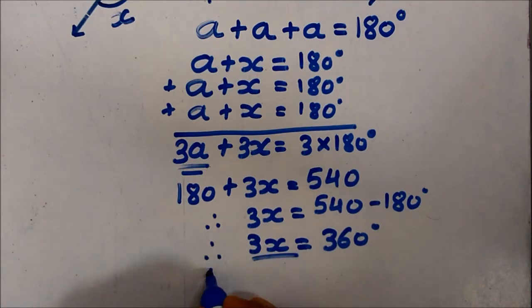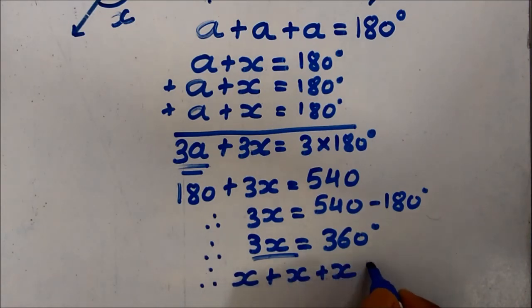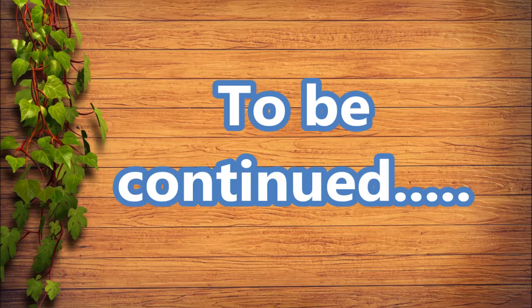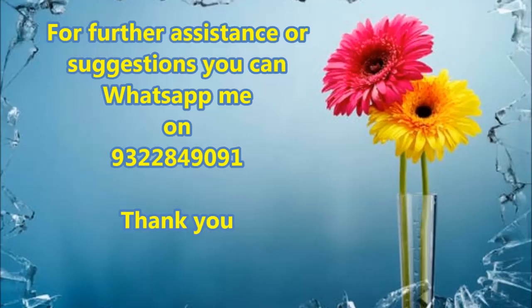3x, or we can write it like this also: x plus x plus x is equal to 360 degree. So here the sum total of measure of all the exterior angles is 360 degree.